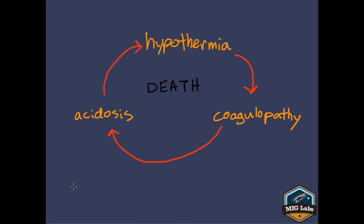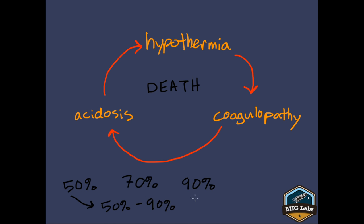Several studies have been done looking at the mortality rate for patients who had all three of these conditions. One study found it to be 50%, another found it to be 70%, and a U.S. Army study found it to be 90%. So we're looking at a 50% to 90% death rate for all patients who become hypothermic, acidotic, and coagulopathic. That means we're giving them, at best, a 50-50 chance of living, and at worst, only a 10% chance of surviving.